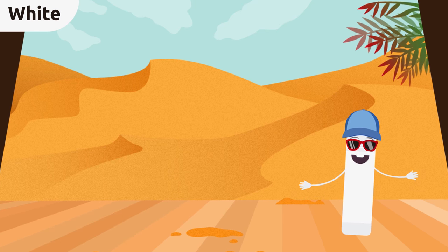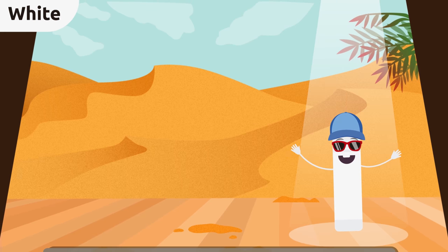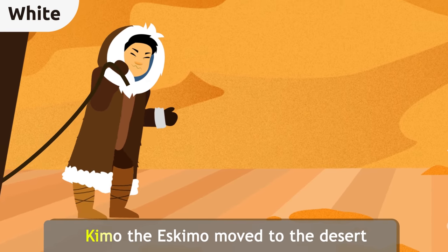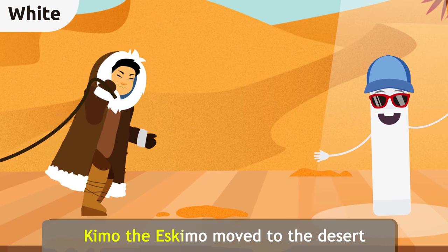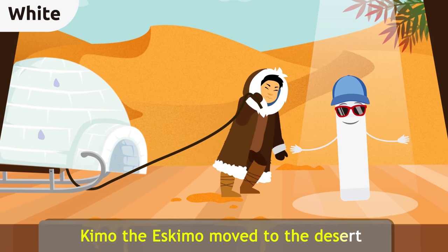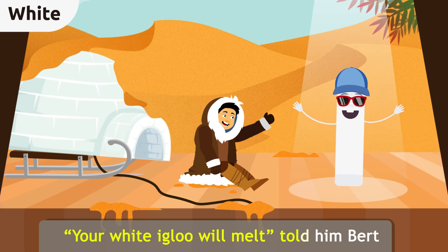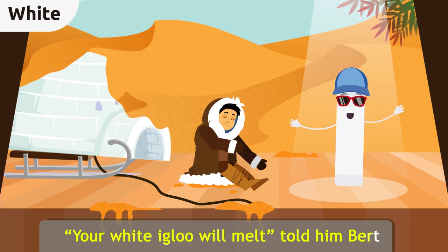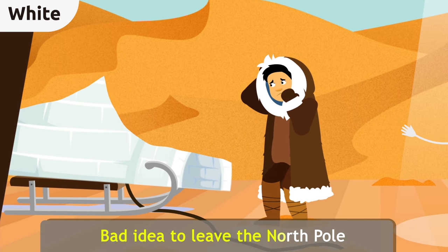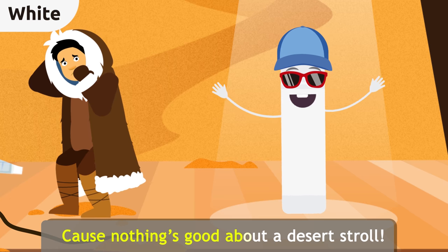I think it's time to sing now, Eskimo friend, sing along. King Mo the Eskimo moved to the desert. Your white igloo will melt, told him birds. Bad idea to leave the north pole, cause nothing's good but a desert stroll.